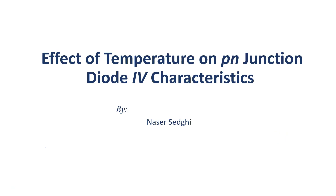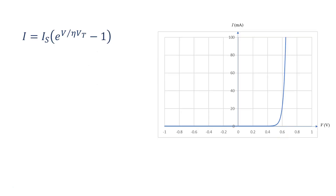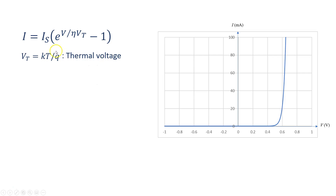In this video I will talk about the effect of temperature on the IV characteristics of a PN junction diode. In the PN junction diode equation there is a parameter VT which is directly proportional to temperature and because of that it is called thermal voltage. However, there is another parameter — reverse saturation current — which is strongly temperature dependent.